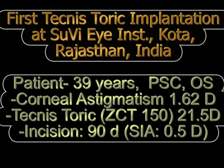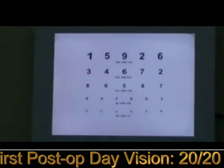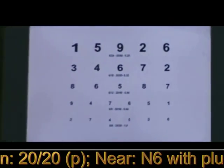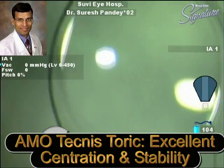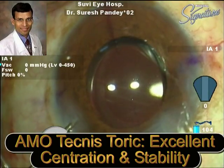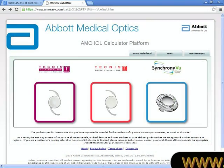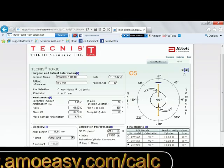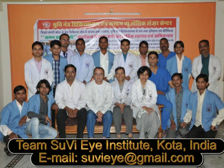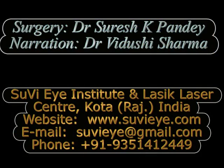To summarize, this was the first Technis Toric IOL implantation performed at Suvi Eye Institute, Kota, Rajasthan, India, on October 9th, 2012, in a 39-year-old patient. Post-operatively on day one, the patient had an unaided vision of 6/6 and N6 near vision with a +2.5 diopter add for near. This is a new toric IOL with excellent centration and stability, and it comes with the amoeasy.com toric calculator which is very user-friendly. Thank you.